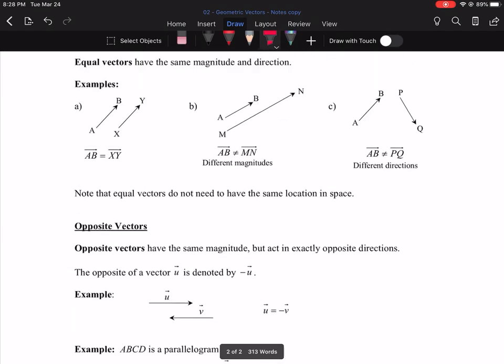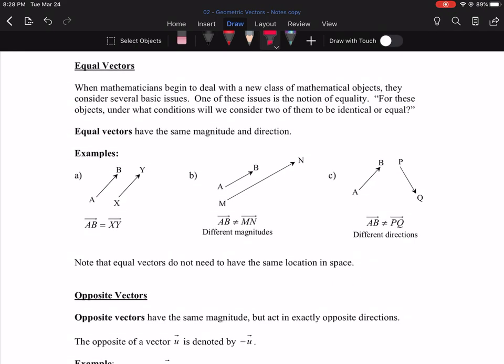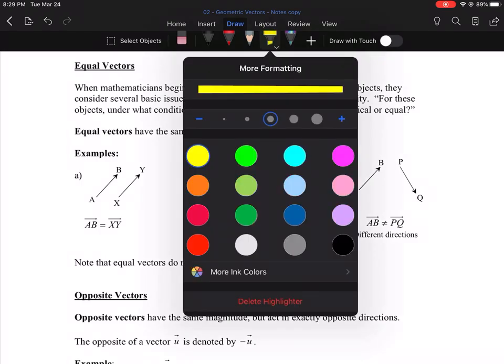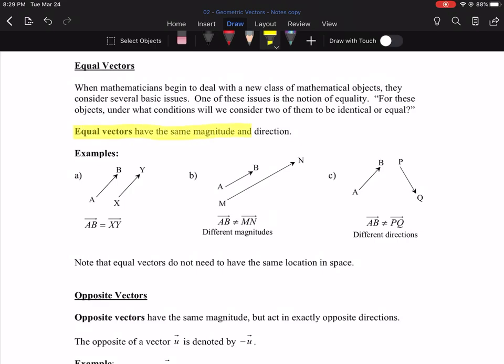Okay, a couple ideas here. Equal vectors. When mathematicians begin to deal with a new class of mathematical objects, and for today we're talking about vectors, they consider several basic issues. One of the issues is the notion of equality. Under what condition will we consider two of them to be identical or equal? And here's the definition. To be equal vectors, they have to have the same magnitude and the same direction. It won't be enough for them to be the same length. They have to have the same magnitude and direction.